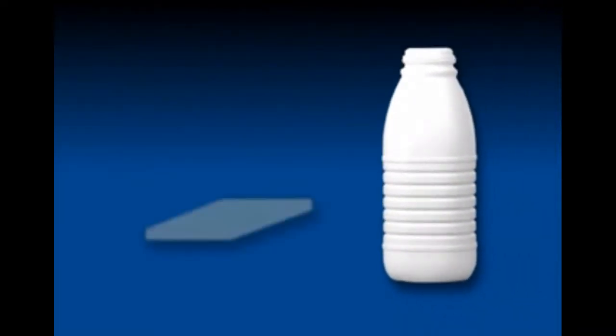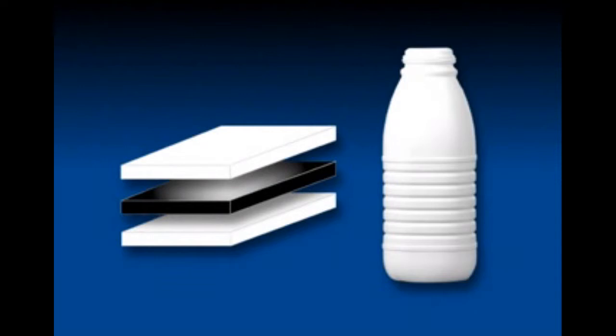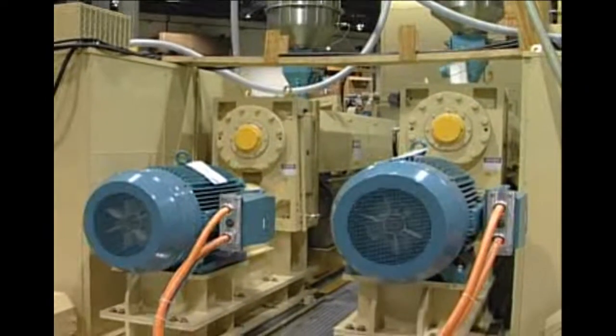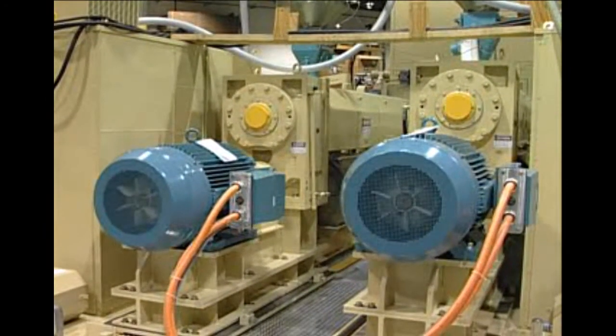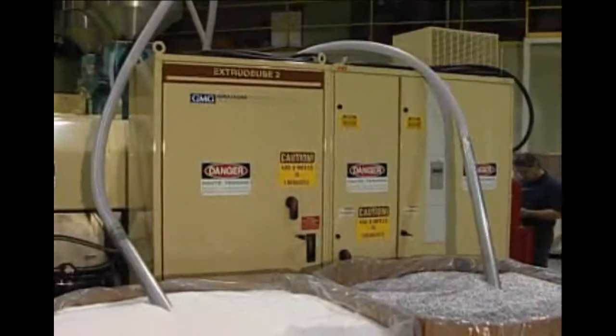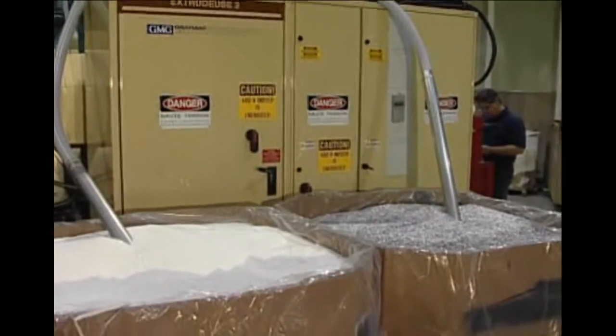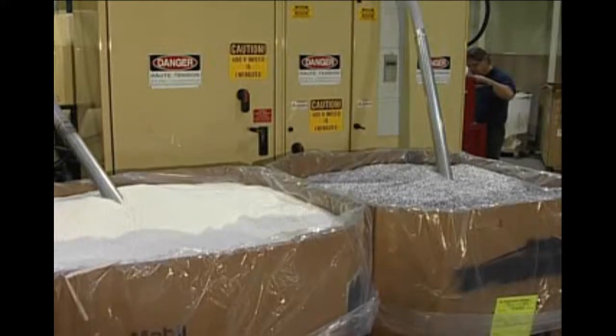Because the bottle design calls for a three layer white, black, white polyethylene construction for UV protection, two 4.5 inch or 120 millimeter extruders are used. One for the inner and outer white virgin resin, and one for the black regrind center layer.